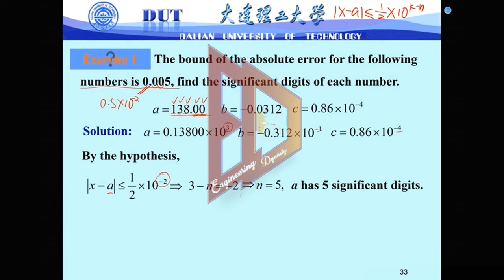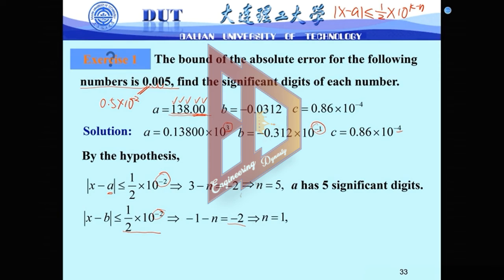For B, the error bound is the same: 1/2 multiplied by 10 to minus 2. But k is different — for B, k is minus 1. So we write minus 1 minus n equals minus 2, giving n equals 1. That means B has only one significant digit. So here we have the digits 3, 1, 2 — three digits — but only 3 is correct. The digits 1 and 2 are wrong digits.